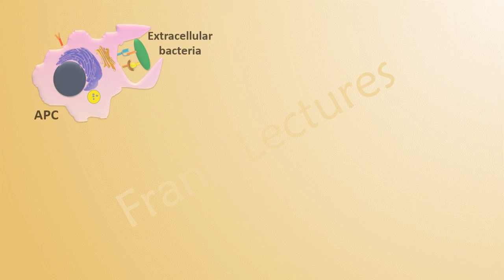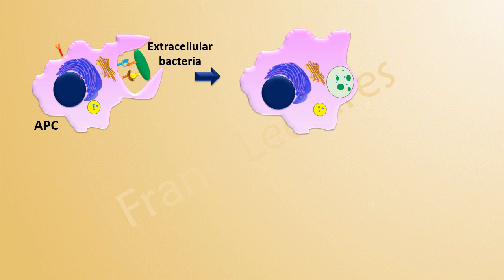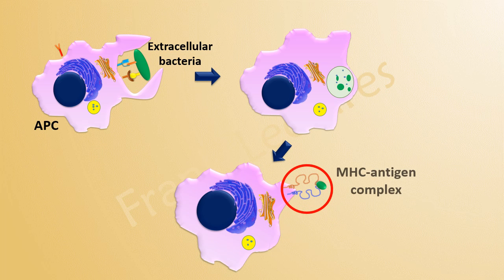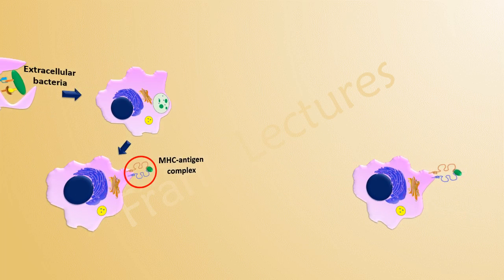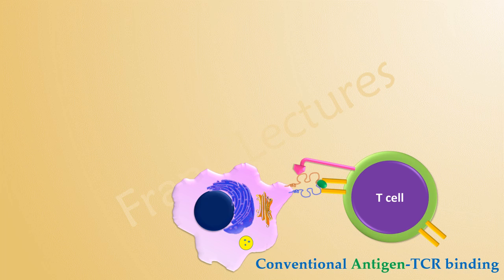When there is an infection by bacteria or virus, the antigen-presenting cell, such as a dendritic cell, engulfs the pathogen, digests it into peptide fragments, and presents it to circulating T-cells as an MHC-antigen complex. T-cells bind to this antigen via the T-cell receptor, and this binding is specific. The co-receptor CD4 or CD8 also binds to the MHC molecule. This is conventional antigen T-cell receptor binding.